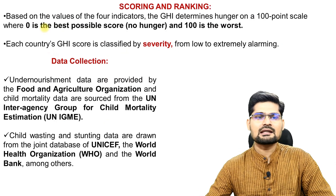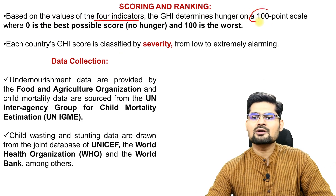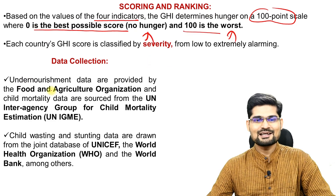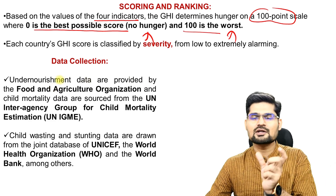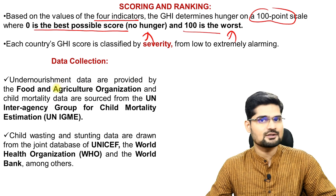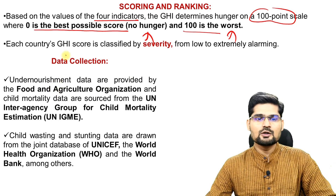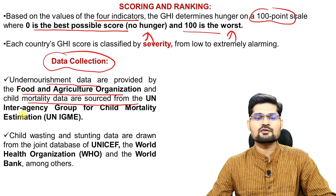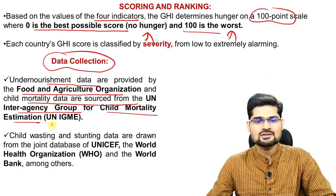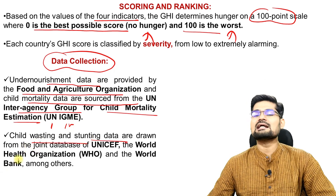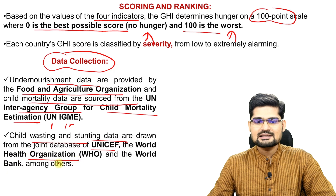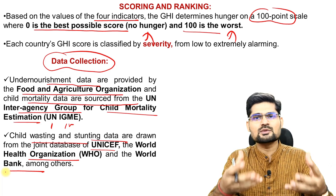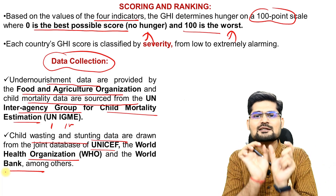Looking into the scoring and ranking: based on the values of these four indicators, GHI determines hunger on a 100-point scale, where 0 is the best possible score (no hunger) and 100 is the worst. Undernourishment data is provided by the Food and Agriculture Organization, child mortality data comes from the UN Interagency Group for Child Mortality Estimation (UNIGME), and child wasting and stunting data come from UNICEF, the World Health Organization, and the World Bank, along with other sources.